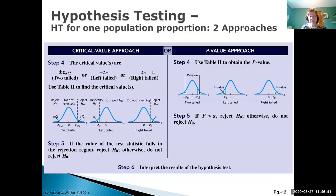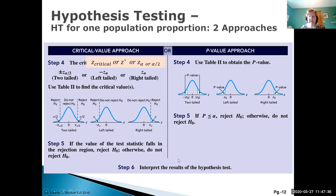We have two methods: the critical value approach and the p-value approach. For the critical value approach, we calculate a critical test statistic based on our alpha level — also called Z-critical, Z-star, Z-alpha, or for a two-tailed test, Z-alpha-over-two. Once we have that, we set up our reject and do-not-reject regions, then determine whether our Z-calculated falls in the reject region or the fail-to-reject region.